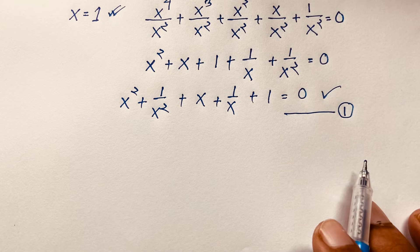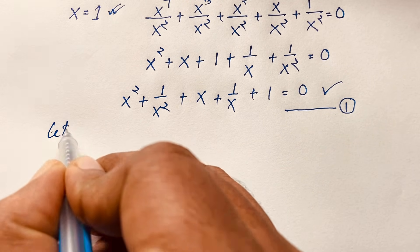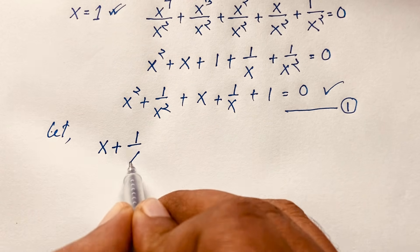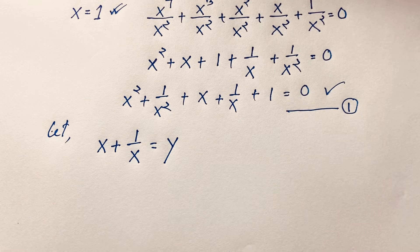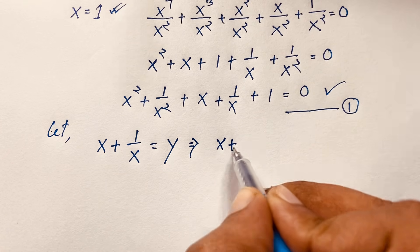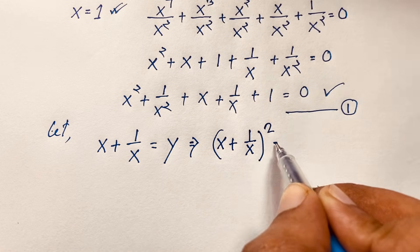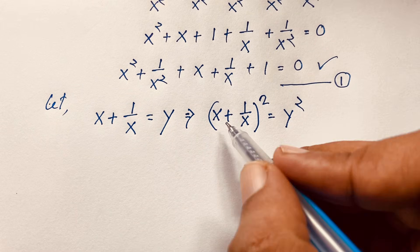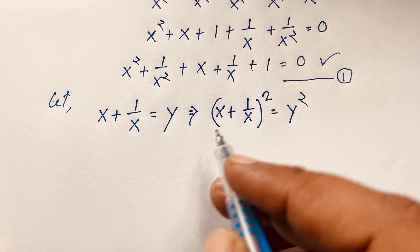Now how to simplify for x in this exponential expression. Let x plus 1 over x equal to y. If I use both sides whole square, so x plus 1 over x bracket to the power 2 is equal to y to the power 2. We know that (a plus b) whole squared is a squared plus 2ab plus b squared, so I apply this math formula here.